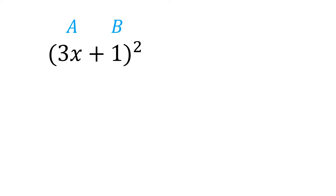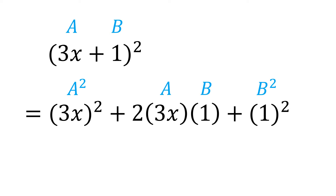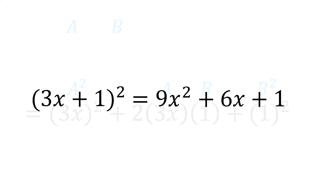Now instead of using the FOIL method, just take the square of 3x plus twice the product of 3x and 1 plus the square of 1, which is equal to 9x squared plus 6x plus 1. Therefore, (3x + 1) squared is equal to 9x squared plus 6x plus 1.